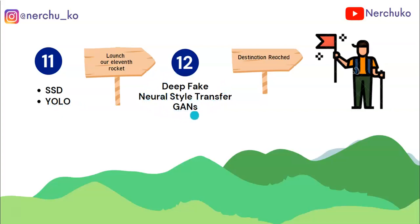Next are advanced topics: Deepfake, Neural Style Transfer, and GANs. These are advanced topics. If you are using GANs, you can create artificial, realistic images. Neural Style Transfer takes one image's properties and transfers them to another image. We also use Deepfake — you can morph images using Deepfake technology. This is our final stage of computer vision.